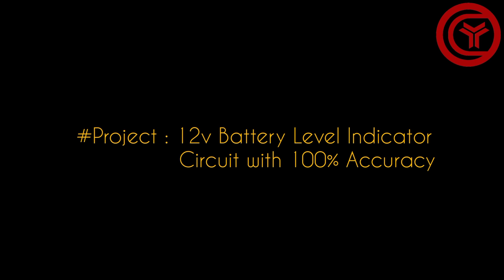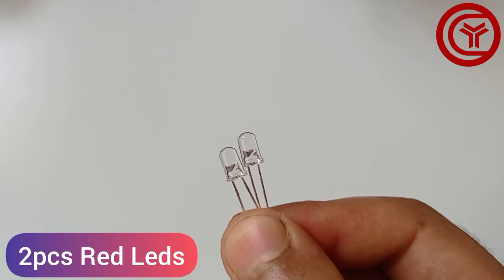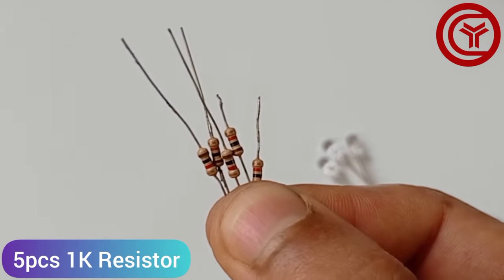Today we will make a 12 volt battery level indicator. We need 2 pieces of red LED, 3 pieces of blue LED, and 5 pieces of 1 kilo ohms resistors.